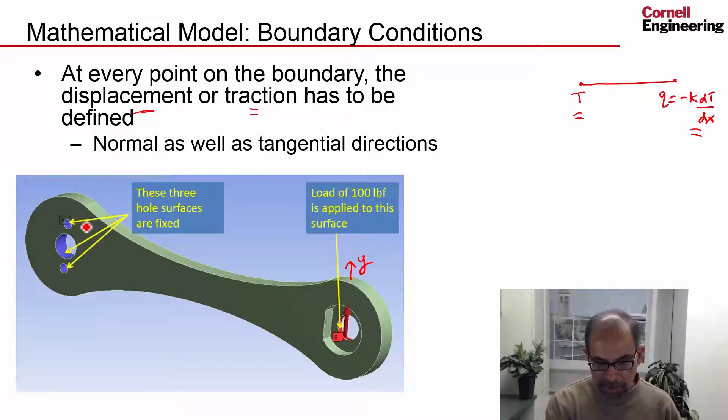Now that's a displacement boundary condition. What that will set under the hood is U equals V equals W equals zero. That looks like that, and it's an essential boundary condition, so it has to be satisfied exactly.